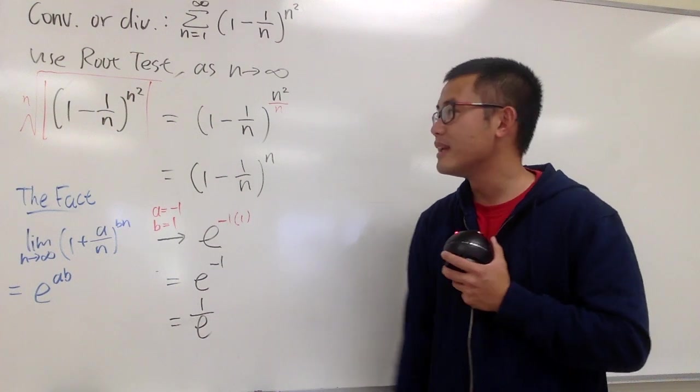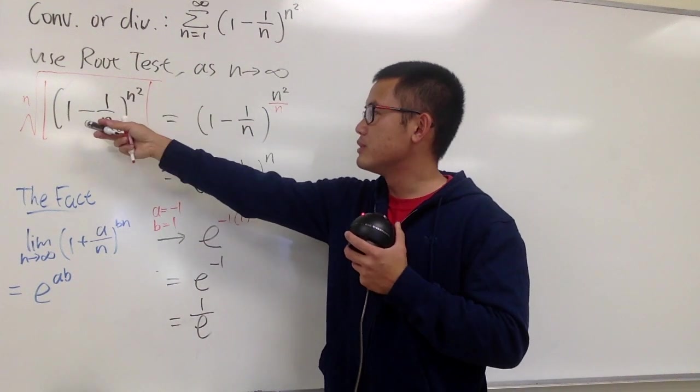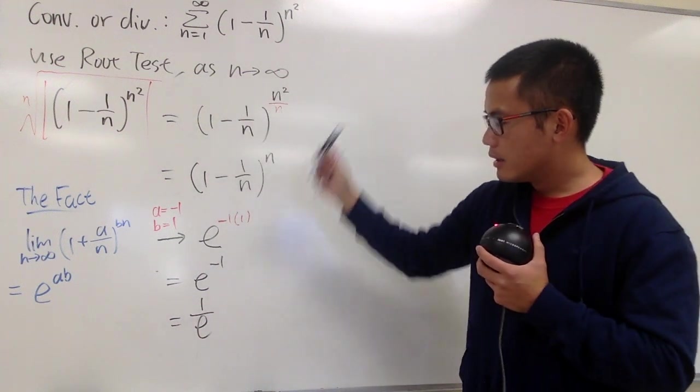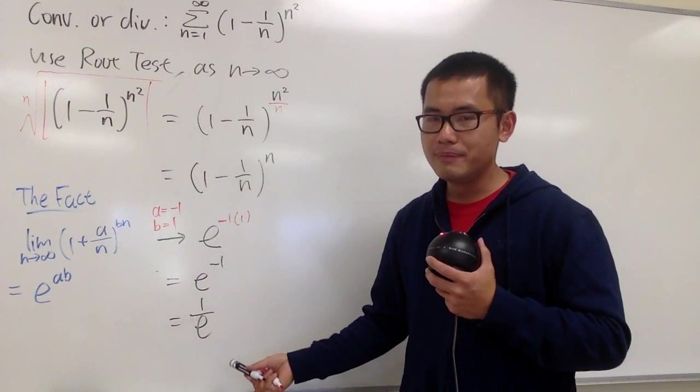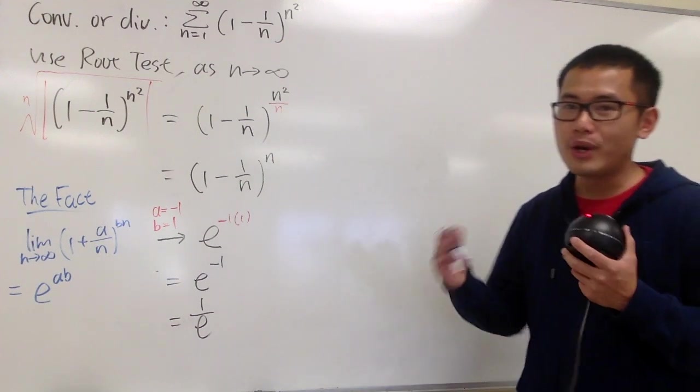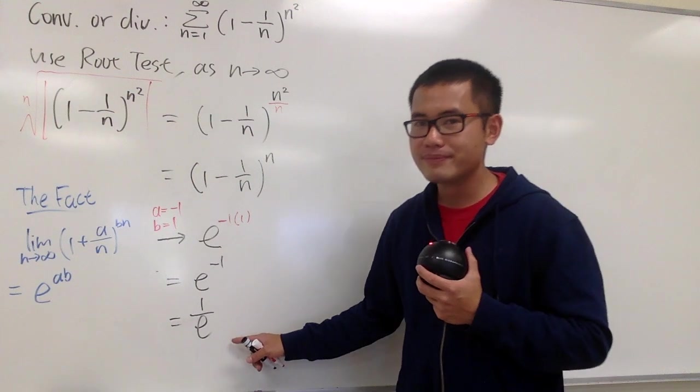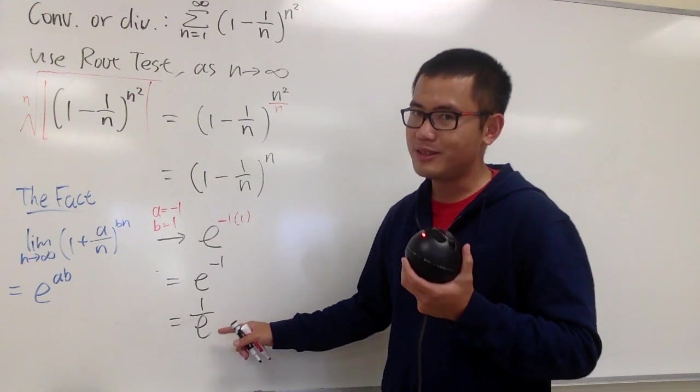So, when we do the root test, you do the limit and you take the nth root of all this. The result is 1 over e. This is not 1. This is good because we can draw a conclusion either way. And you know e is about 2.718 something. 1 over 2 point something is going to be less than 1.